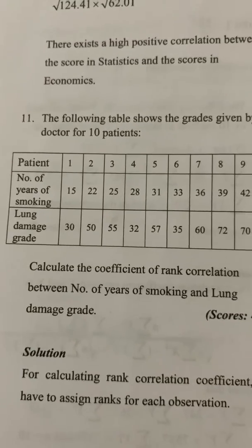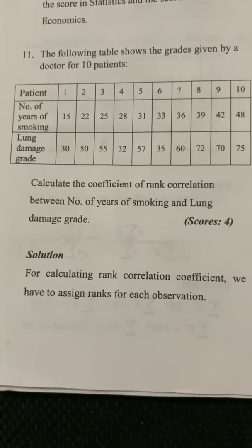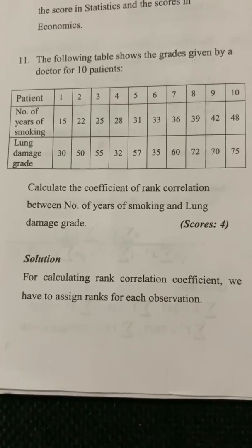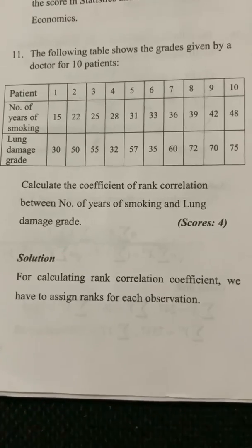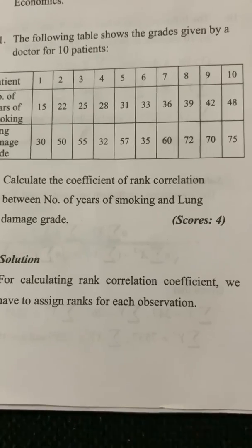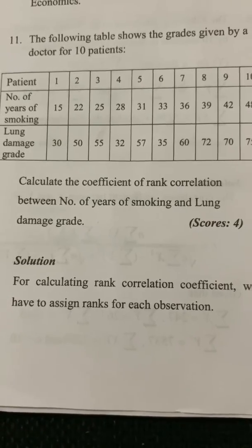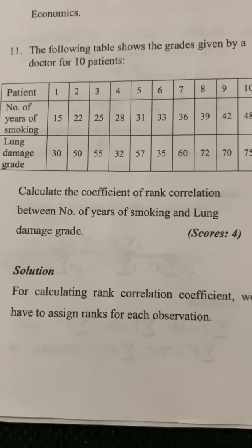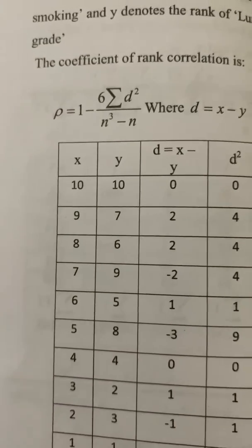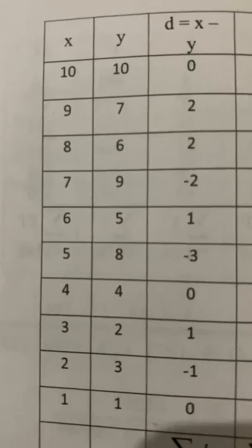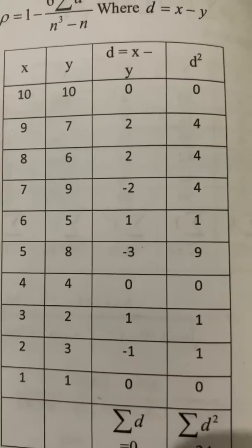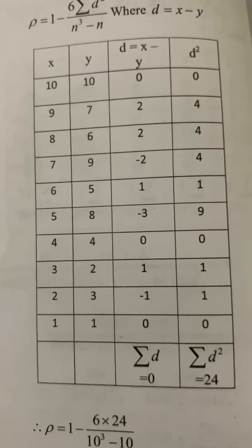The following data shows grades given by a doctor for 10 patients based on the number of years of smoking. We need to calculate the rank correlation coefficient. We will arrange x and y values, assign ranks, compute D as the difference of ranks, find D-squared, sum them, and substitute into Spearman's formula.